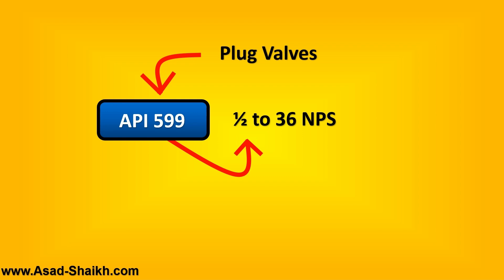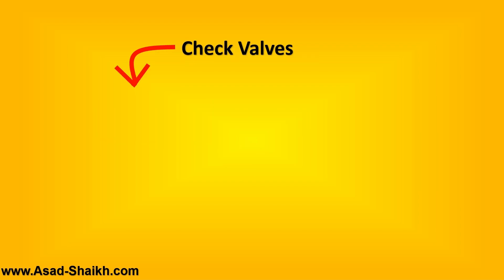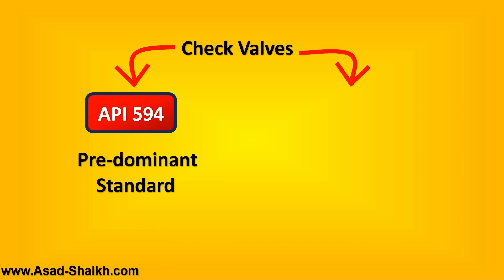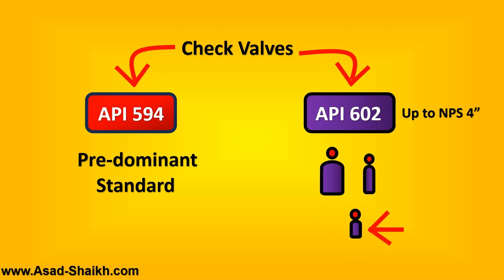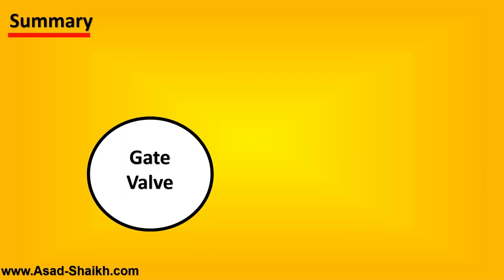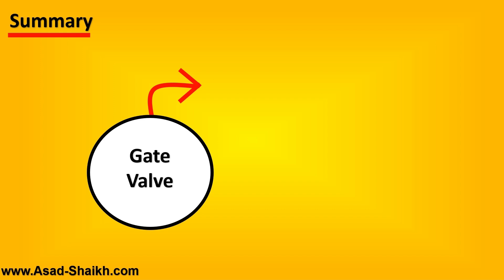For plug valves, the dominant standard is API 599, covering half-inch to 36-inch nominal pipe size — almost all plug valve applications. For check valves, the predominant standard throughout the industry is API 594. API 602 is also used for small-size check valves up to 4 inches — the same smaller-brother standard we saw for gate valves. Generally, API 594 is the best option for check valves.